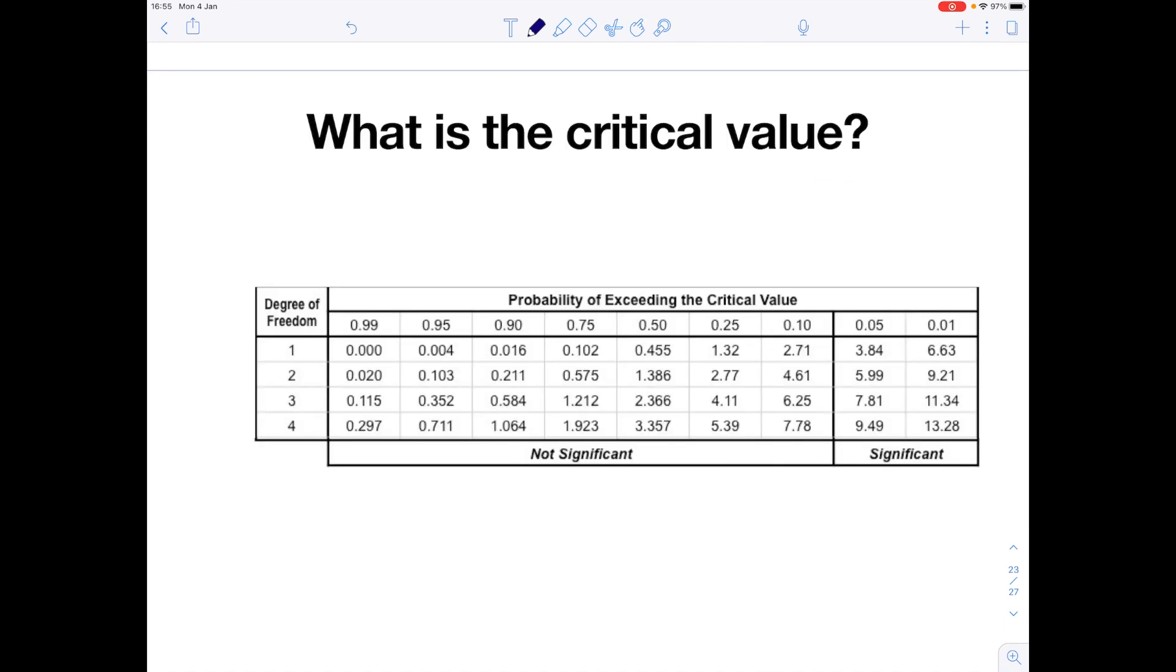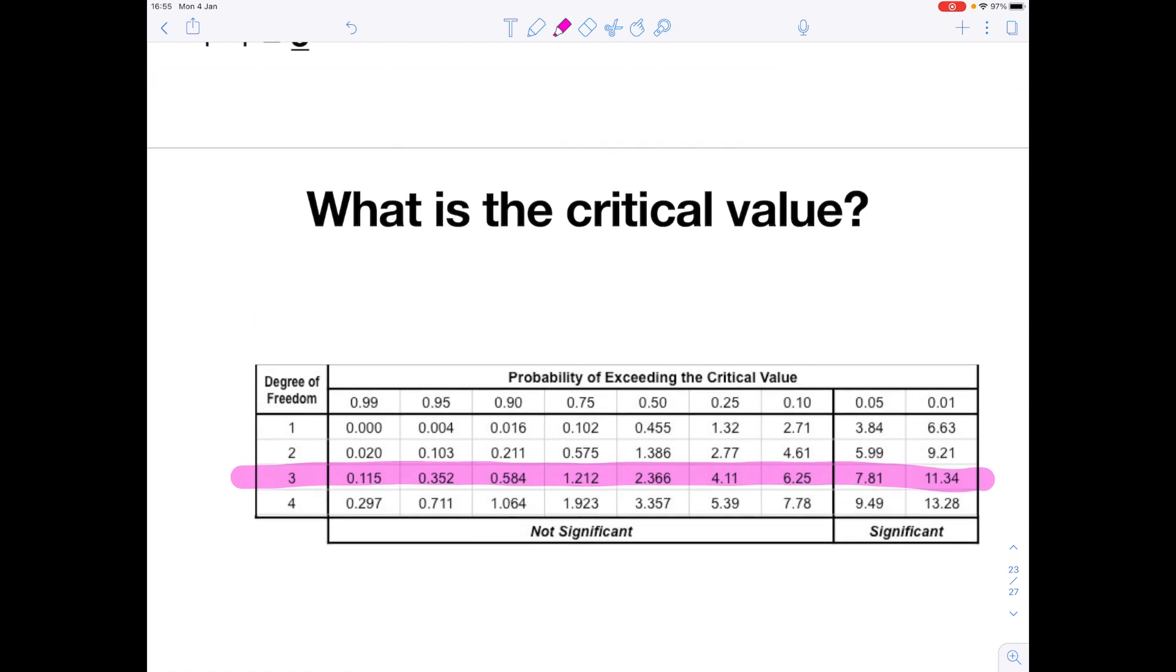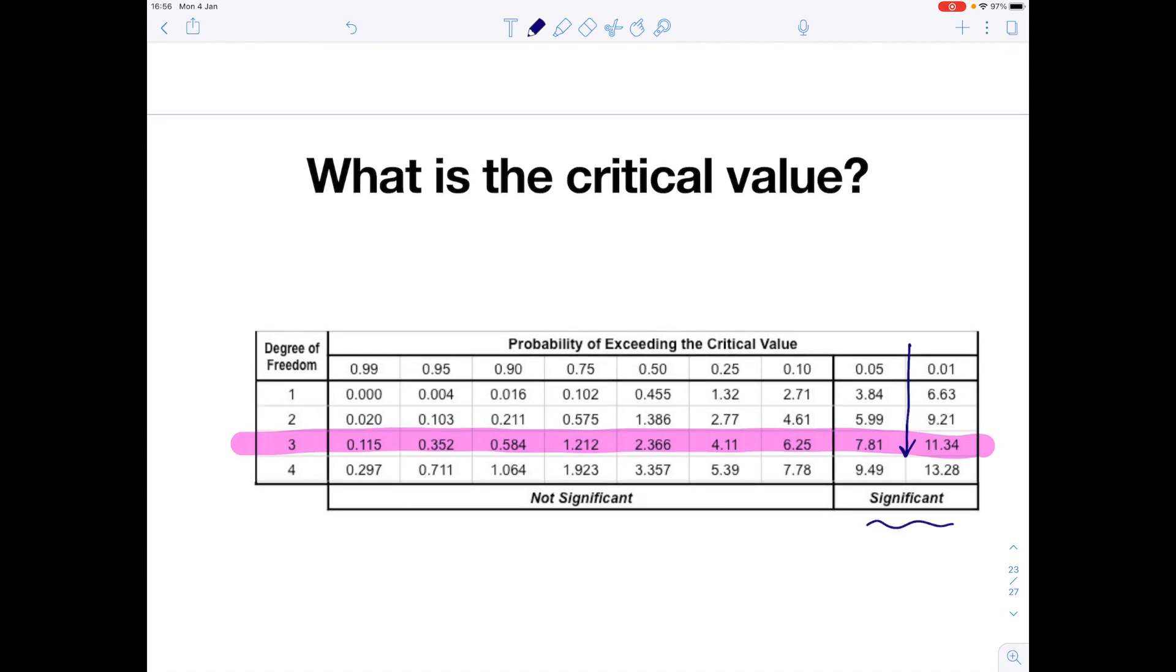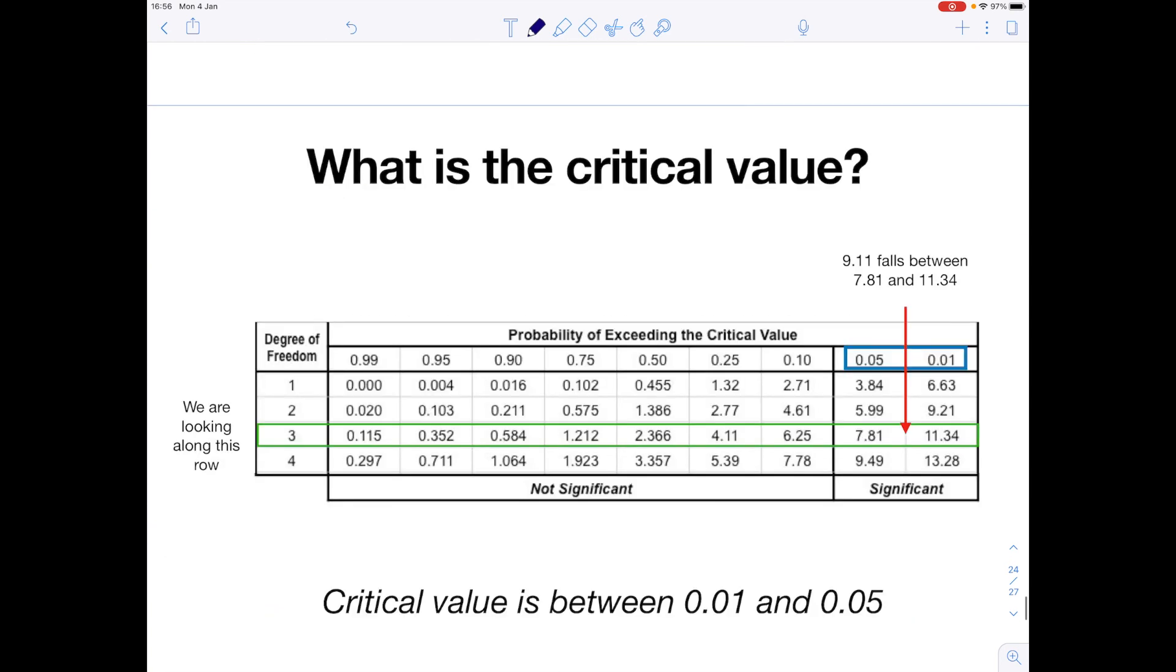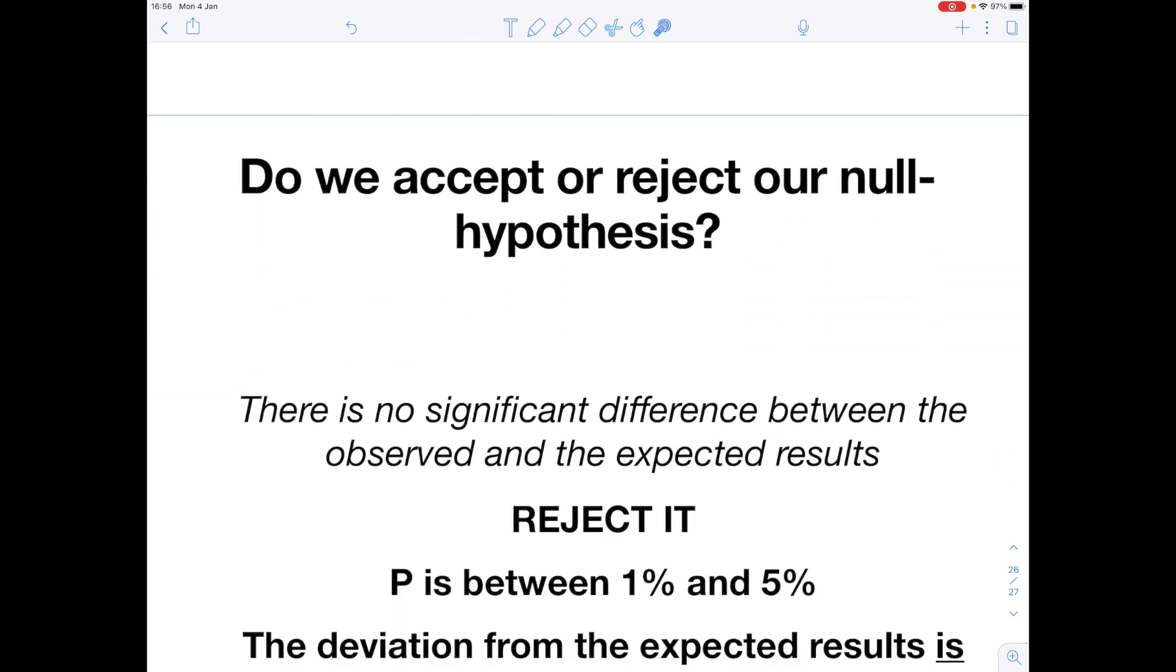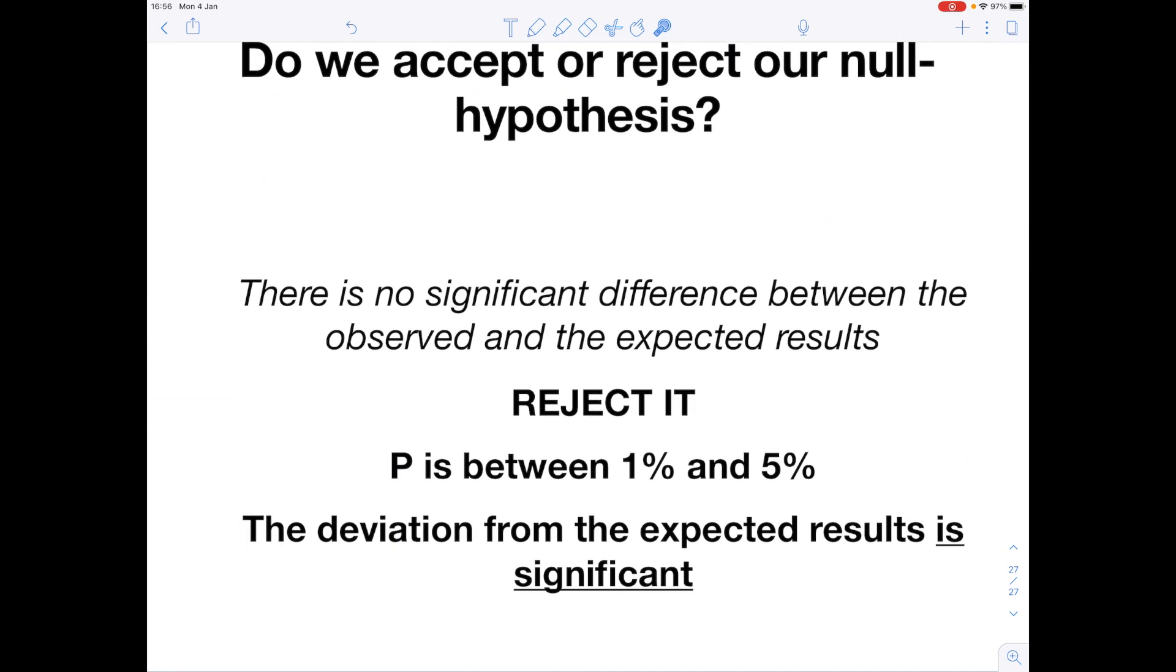So we're looking along this row here. We know that our chi-squared value is 9.11, which fits in here in the statistically significant column. 9.11 falls between 7.81 and 11.34, which means we reject the null hypothesis. Because our p-value sits between 1% and 5%, the deviation from the expected results is statistically significant. So we reject the null hypothesis.